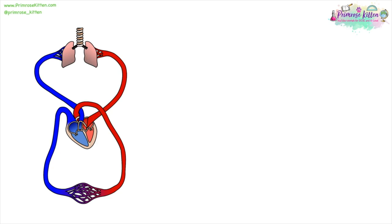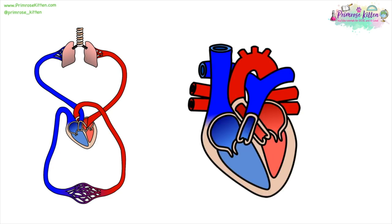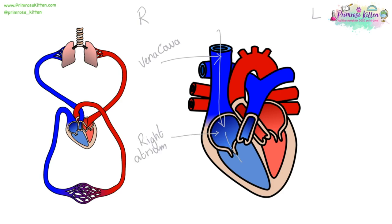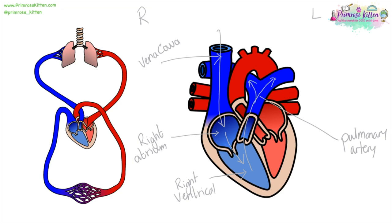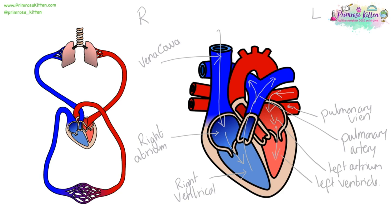Here we have the cardiovascular system and it is a double system. The blood gets pumped from the heart to the lungs, goes back to the heart and then gets pumped around the rest of the body. If you see a picture of the heart, the first thing you do is write right and left on there. We have our vena cava where the blood enters, it goes into the right atrium, down through a valve into the right ventricle. From the right ventricle, it goes up and to the lungs via the pulmonary artery. It comes back into the heart via the pulmonary vein, into the left atrium, into the left ventricle, and then it's pumped to the rest of the body via the aorta.